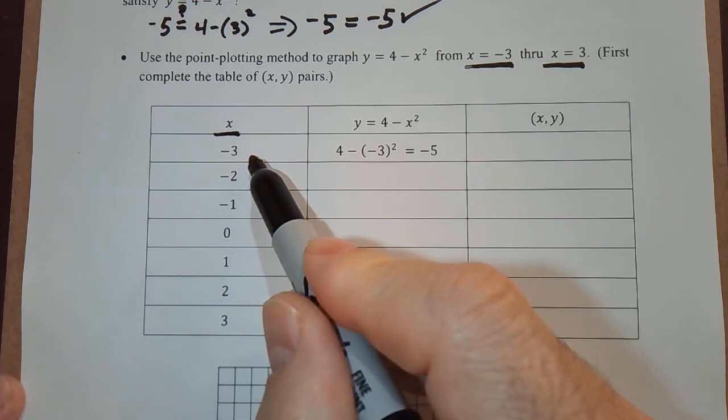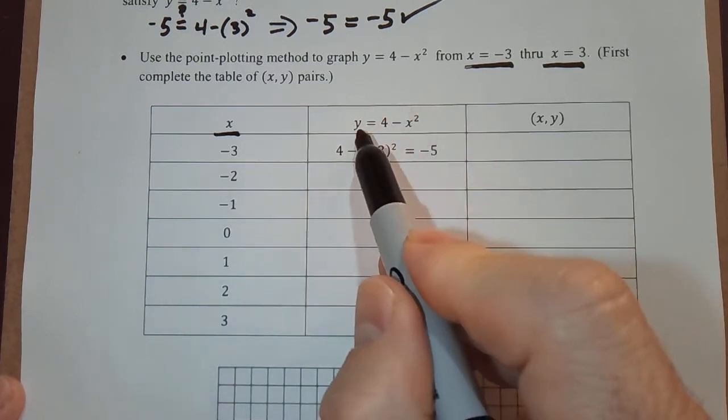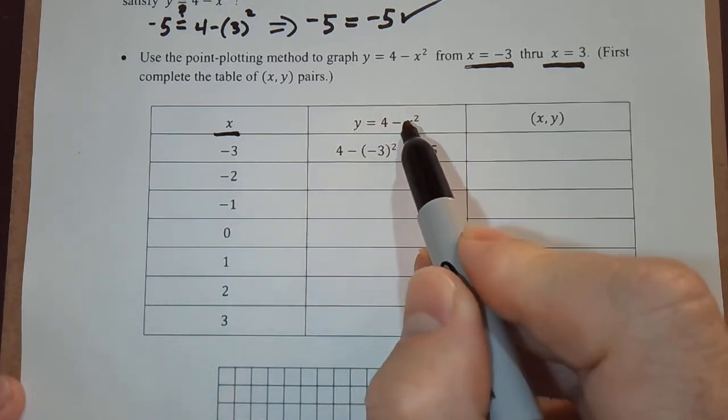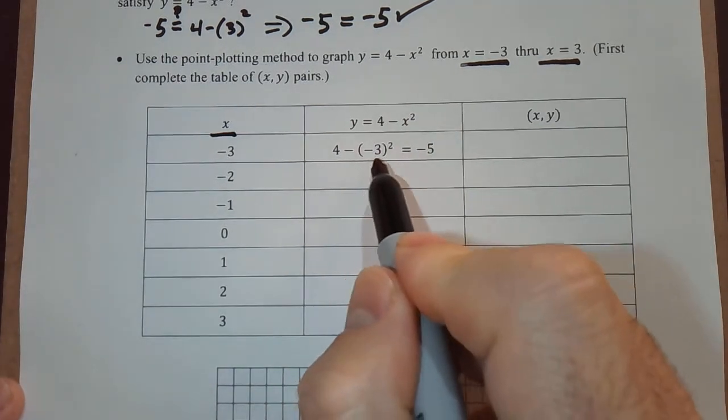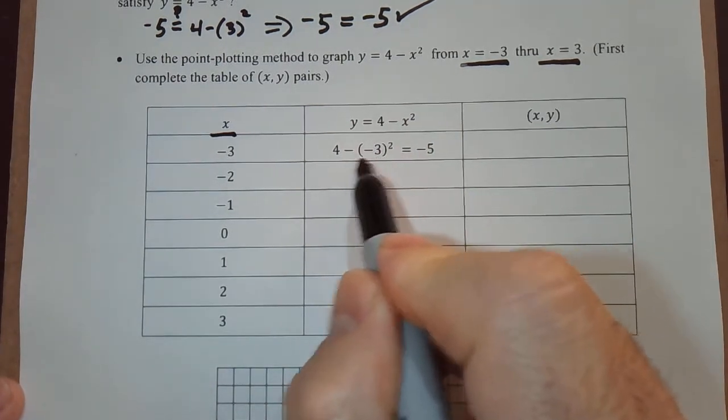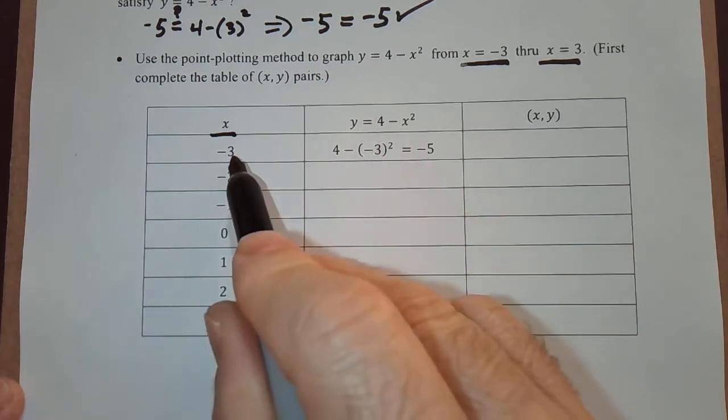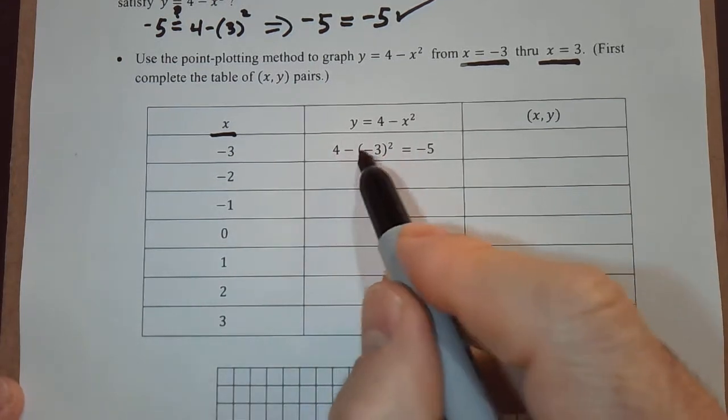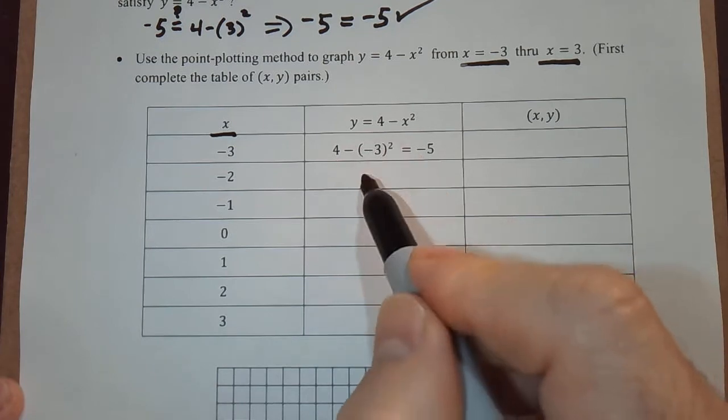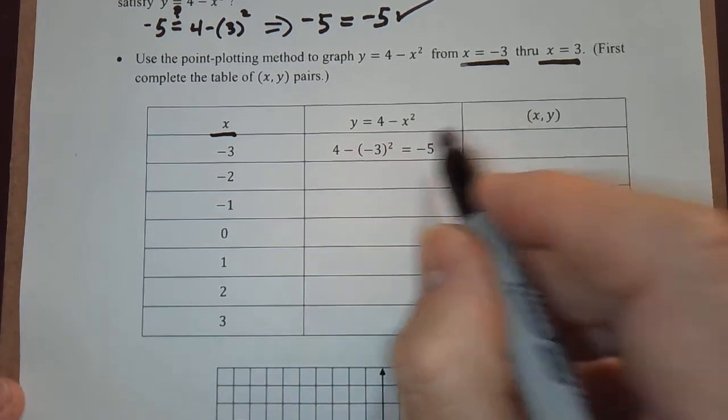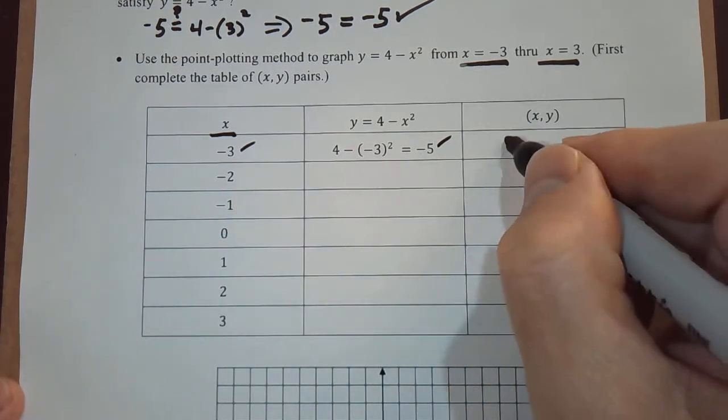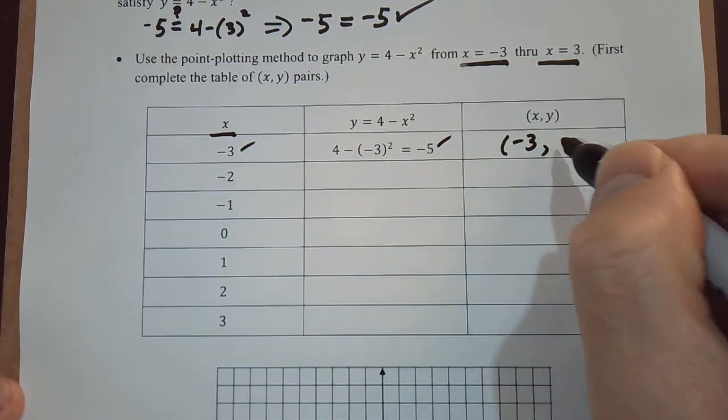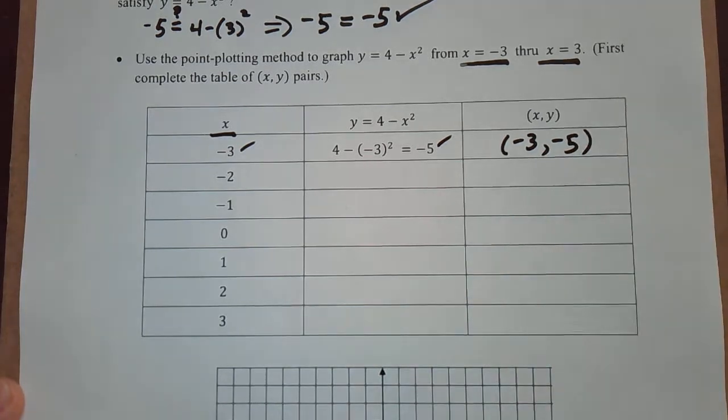Negative 3 is the x value, so y is going to equal 4 minus negative 3 squared, and you really should make sure you write the negative 3 in parentheses when you're replacing x with the negative 3. So 4 minus negative 3 squared is 4 minus 9, and that's equal to negative 5. So I'm going to take that number and that number, and we get an ordered pair, negative 3, negative 5.